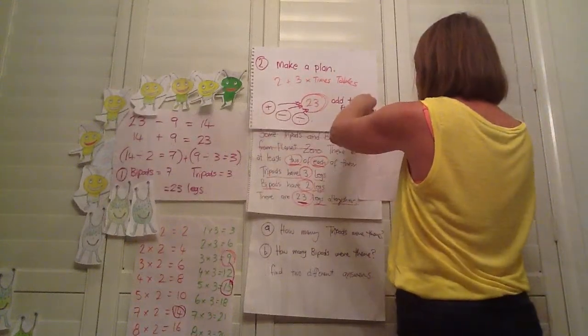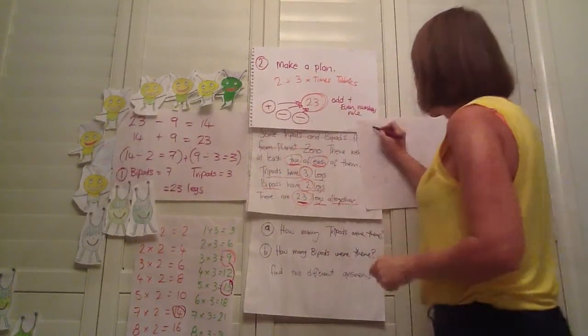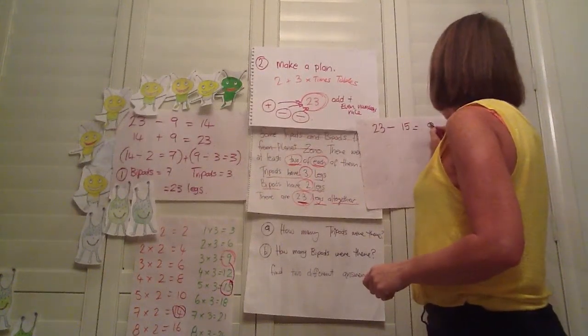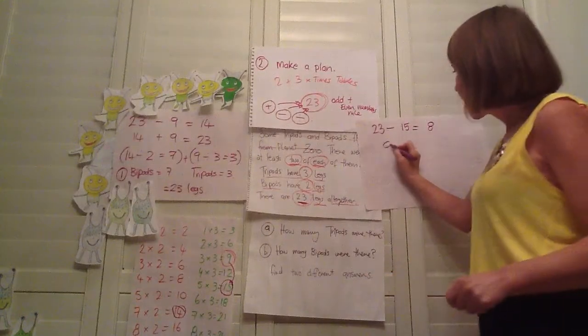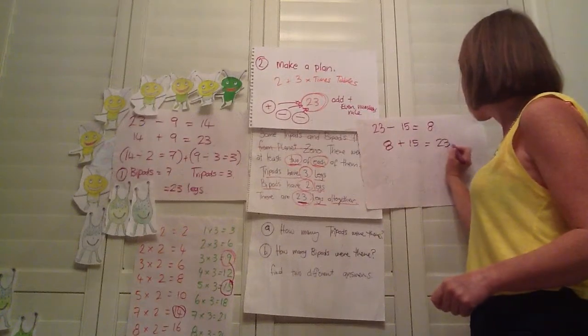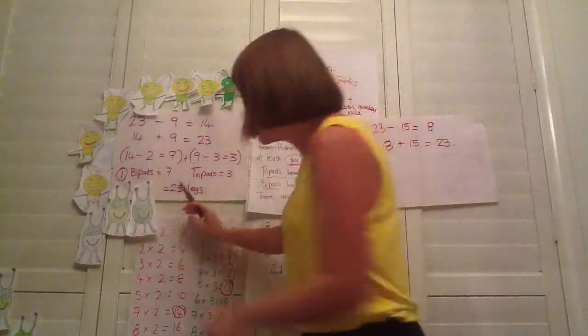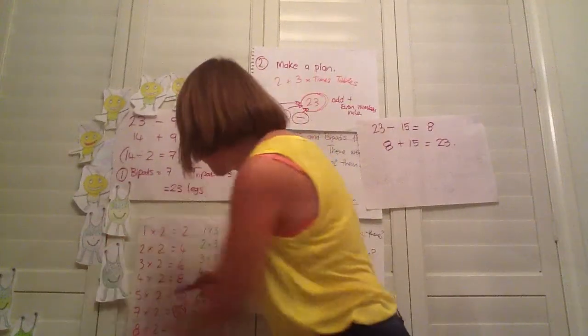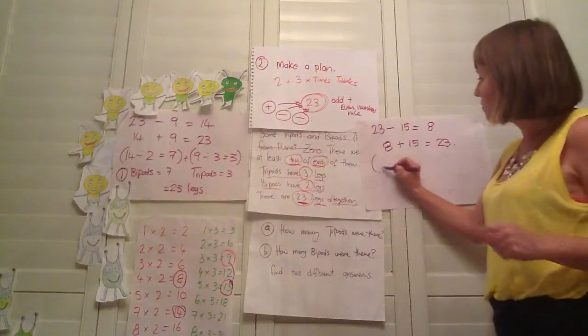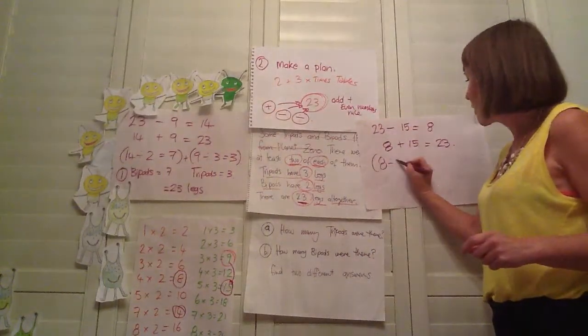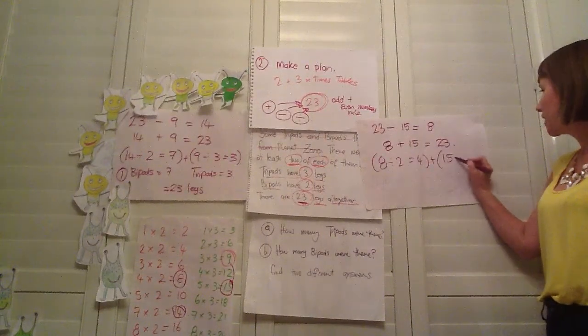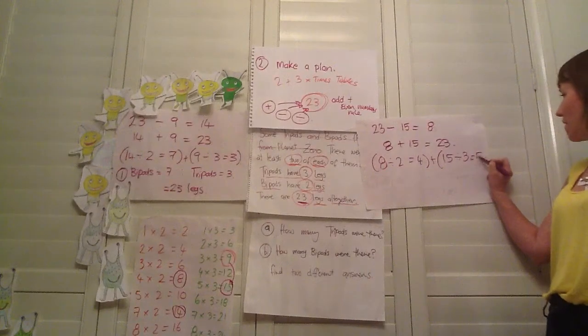Okay. So 23 take away 15 equals eight and eight plus 15 equals 23. Now let's see if we can find eight on our two times table and I can see eight just here. So four times two equals eight. Okay.